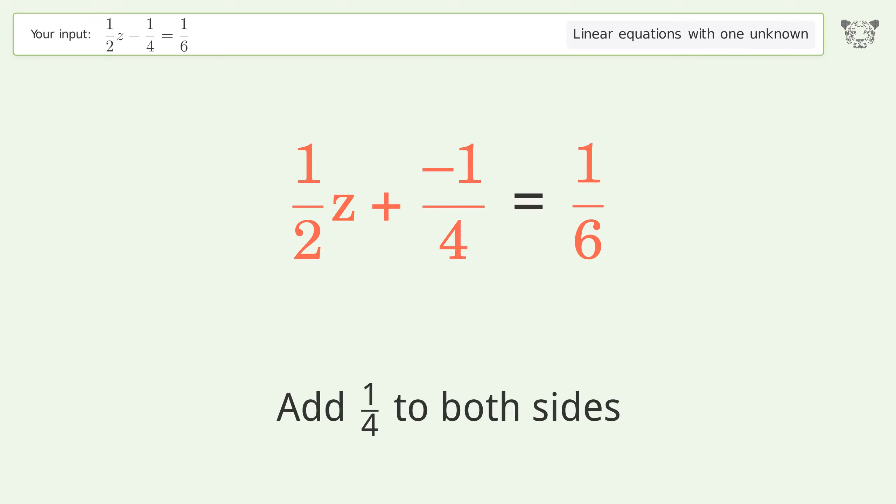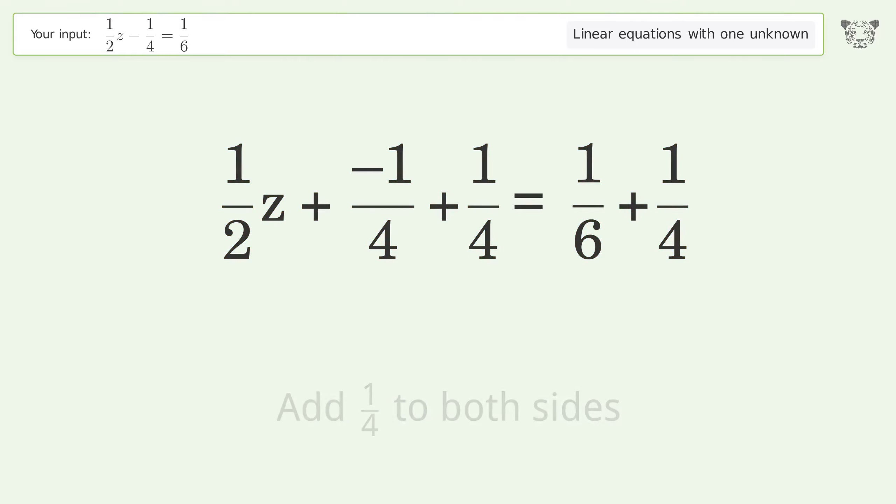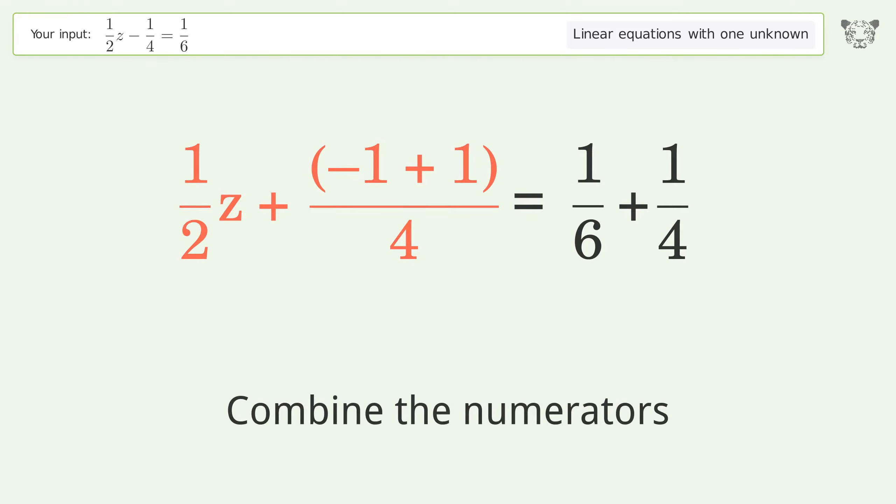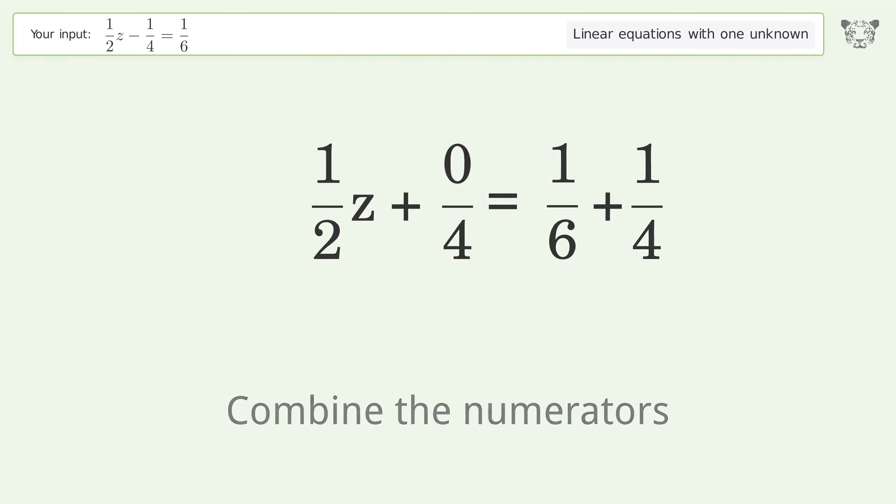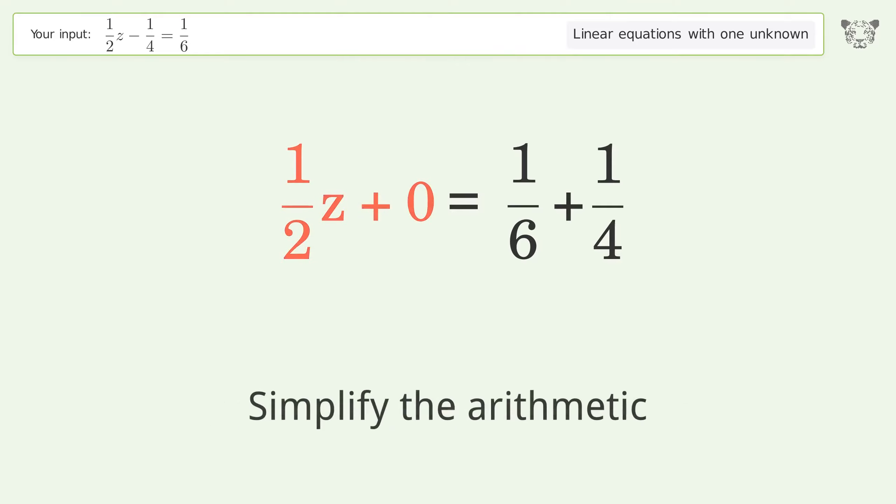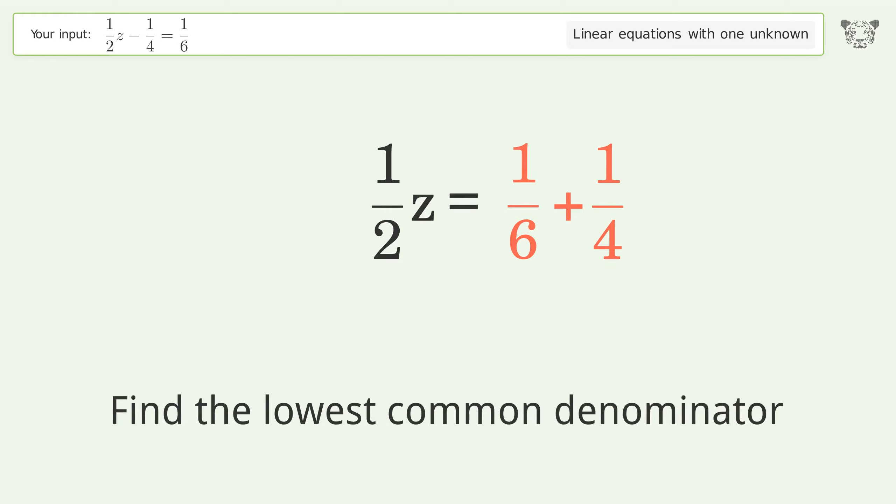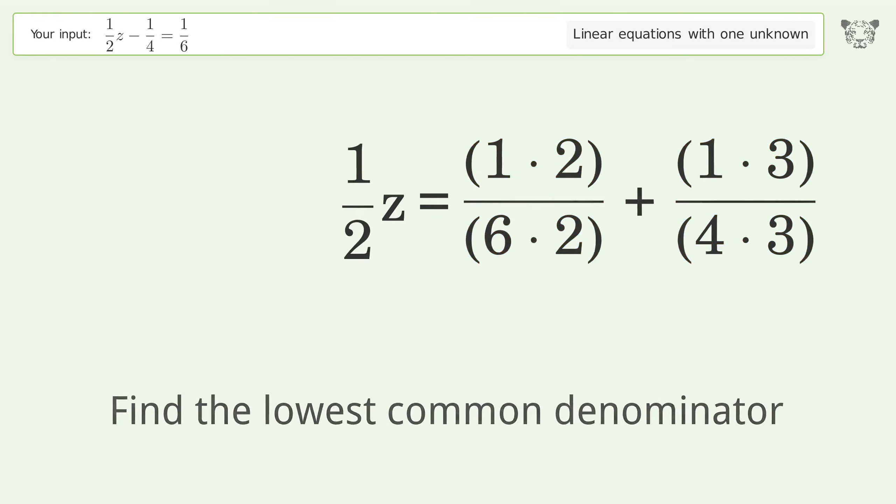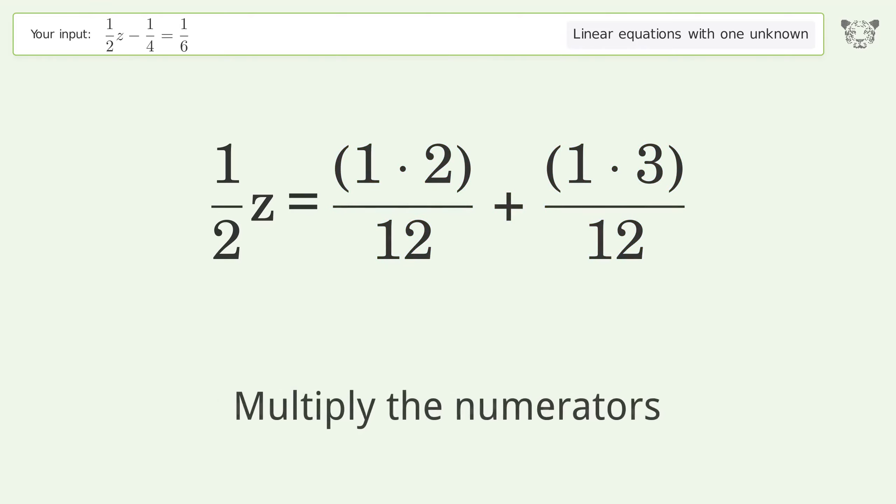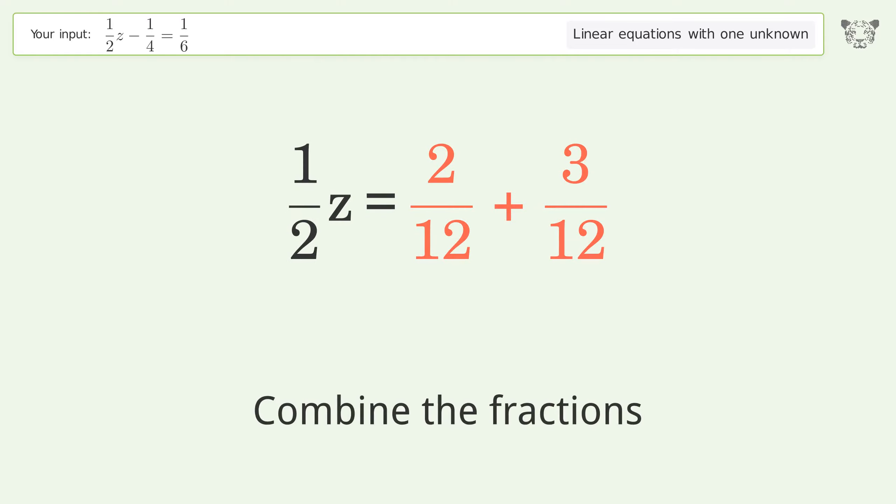Combine the fractions. Combine the numerators, reduce the zero numerator, simplify the arithmetic. Find the lowest common denominator. Multiply the denominators, multiply the numerators. Combine the fractions, combine the numerators.